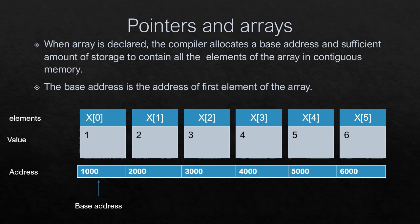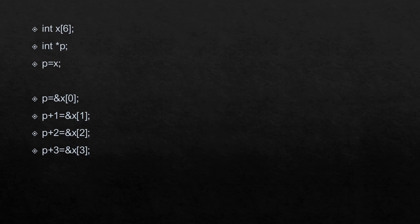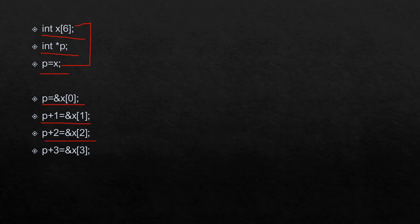Now, pointers and arrays. In an array, the first element's address is the base address. For example: int x[6] with elements x[0], x[1], x[2], x[3], x[4], x[5]. Declare int *p, then p = x means p is pointing to the base address of the array (same as p = &x[0]). Then p+1 points to the second element, p+2 points to the third element, p+3 points to the fourth element, and so on.